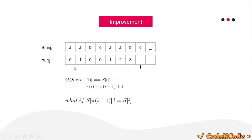This is where we left off in the previous lecture. To calculate pi[i], we already proved that pi[i] can be at most pi[i-1] + 1. To check this, we compare whether the i-th character equals the pi[i-1]-th character. If this condition holds, then pi[i] equals pi[i-1] + 1. We left off at the question: what if it doesn't hold?